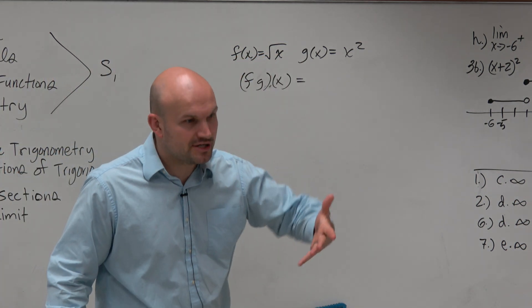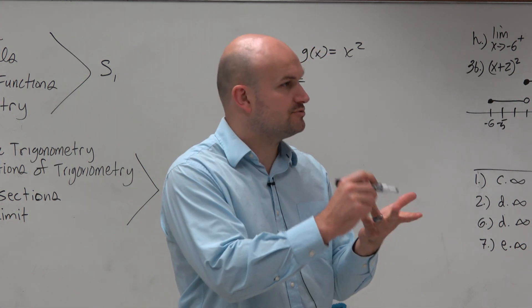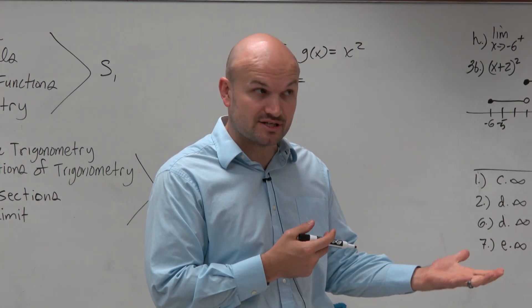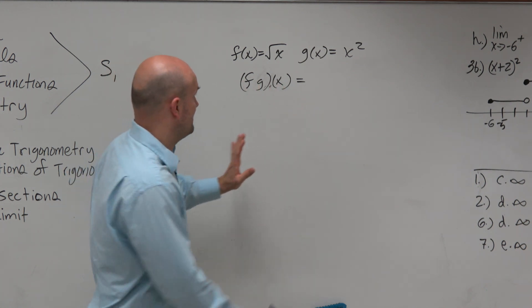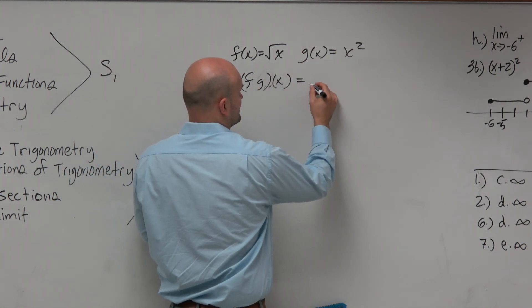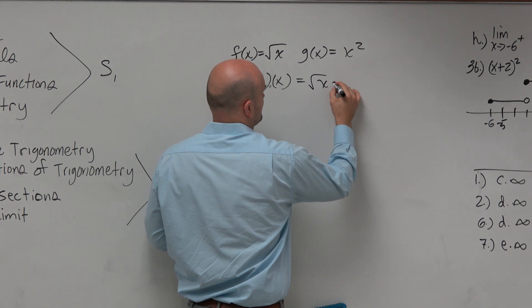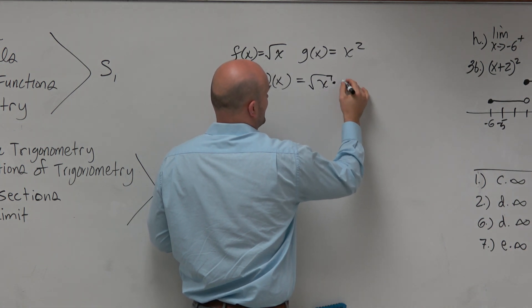We need to remember which operation this is representing: add, subtract, multiply, divide, or composition. This is actually multiplying. So we're just going to be multiplying them. And we could simply rewrite this as square root of x times x squared.